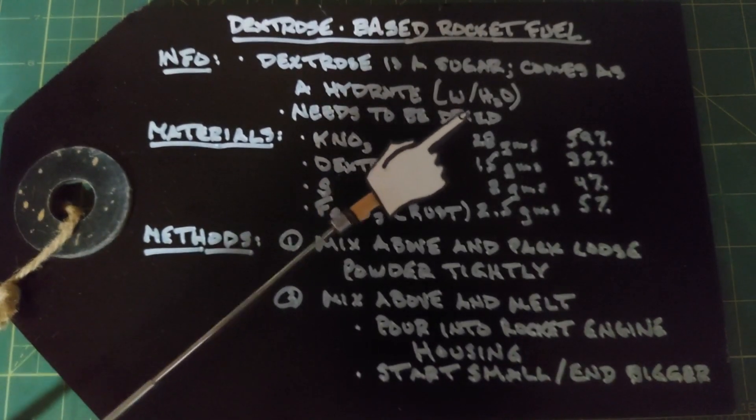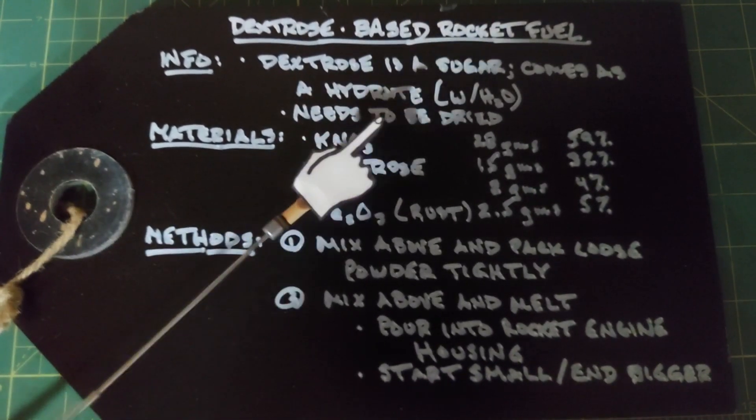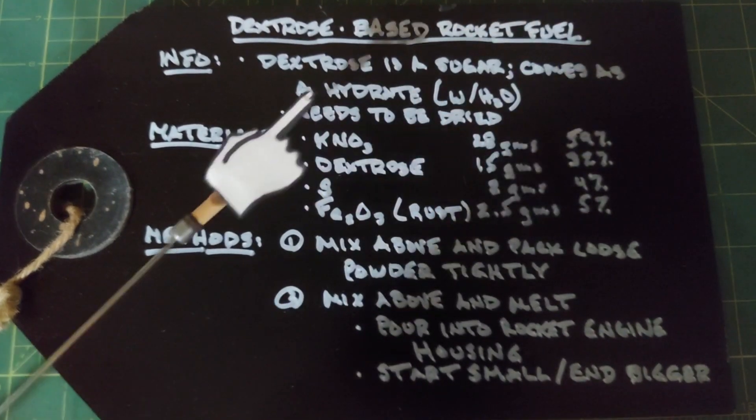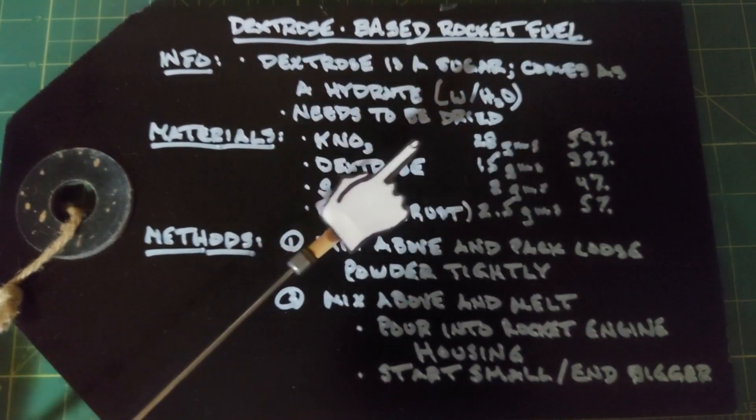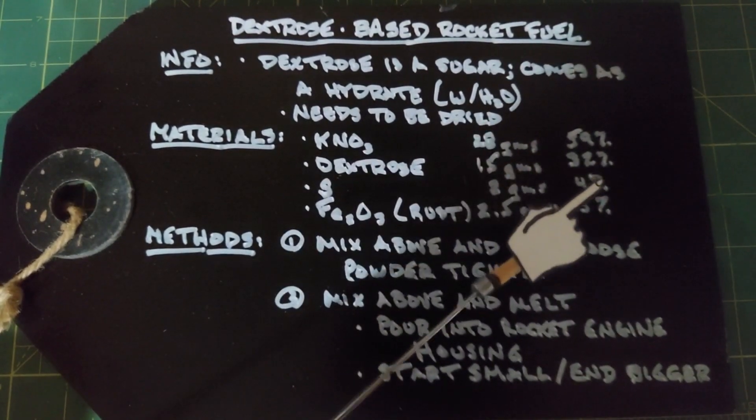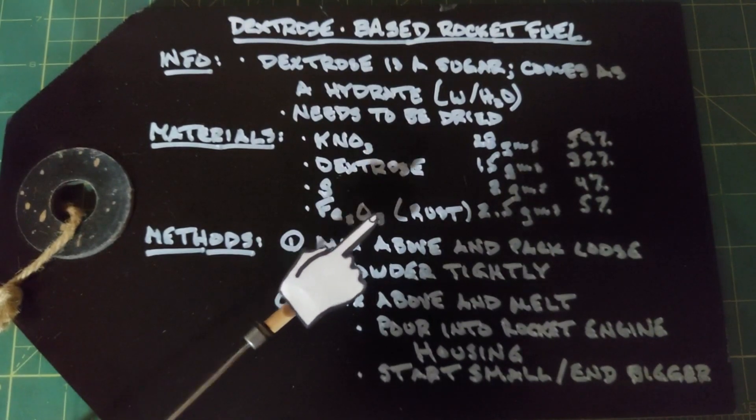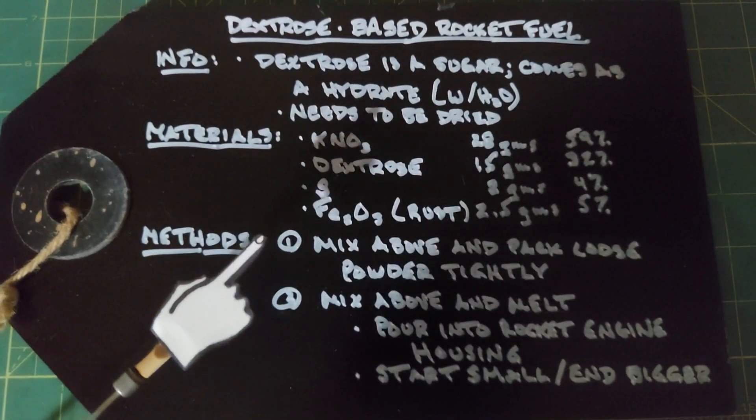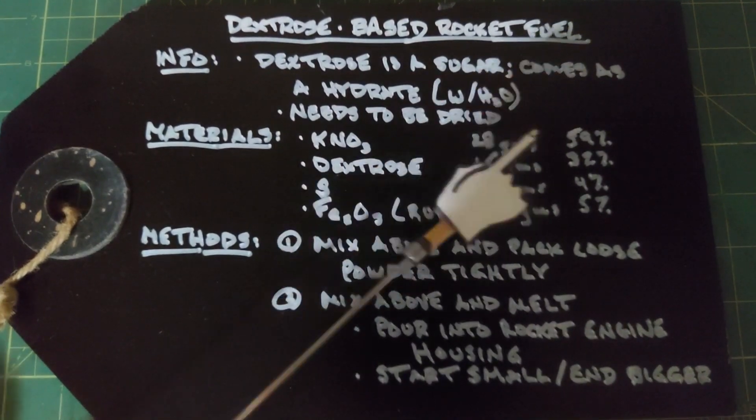Materials consist of potassium nitrate KNO3, 28 grams which is 59% of the mix; dextrose once it's been dried, 15 grams or 32% of the mix; sulfur, 2 grams or 4% of the mix; and iron oxide, aka rust, 2.5 grams or 5% of the mix.